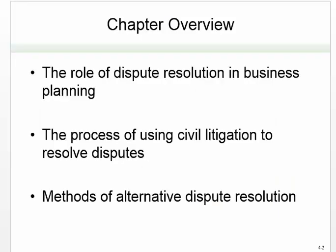First we'll talk about how businesses decide to choose a dispute resolution method — what the strategic and planning decision is — and then go into the details of civil litigation, and then the two main areas of alternative dispute resolution: mediation and arbitration.